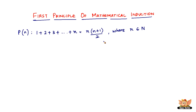Natural numbers are 1, 2, 3, 4 — naturally the way we count. Whole numbers would be 0, 1, 2, 3, 4 and so on. Natural numbers start from 1 and go to infinity. So we have a statement P which says 1 plus 2 plus 3 plus dot dot dot up till n equals n times n plus 1 divided by 2.